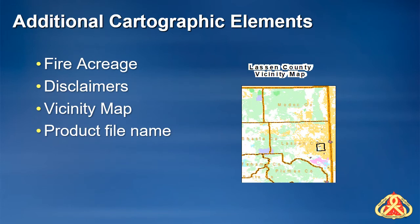Additional cartographic elements: The CIDL is responsible for determining the incident acreage. The fire acreage labeled on the map is the reported acreage, located on the 209 form, and may differ from the acreage calculated by GIS analysis. Disclaimers may be used if needed, and some agencies have standard language. Facility maps illustrate the location of the fire relative to the general area such as a county or state. The extent box indicates the area that the map covers. If the product file name is included, it should be relatively small and serves as a reference to help reproduce the product at a later time.